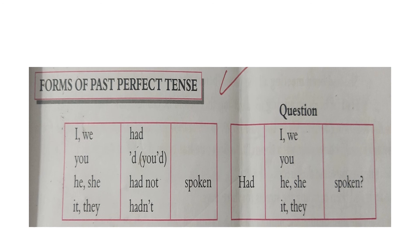Past perfect tense is used to describe an action that was completed before another action took place. Affirmative, negative, and interrogative sentences can be formed from the given table. For example: 'We had spoken to my boss yesterday' — affirmative in past perfect tense. 'They hadn't spoken to you on time about the excursion trip' — negative. 'Had I spoken to you earlier that day?' — interrogative in past perfect tense.